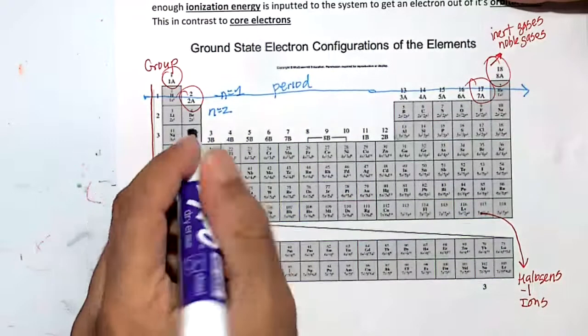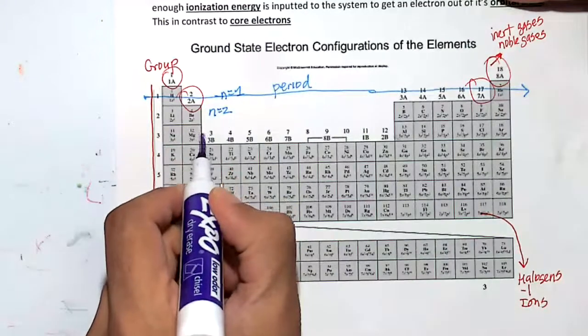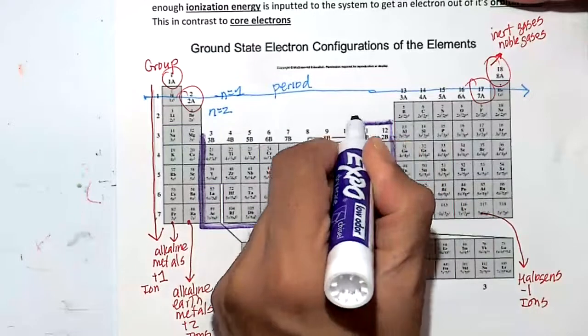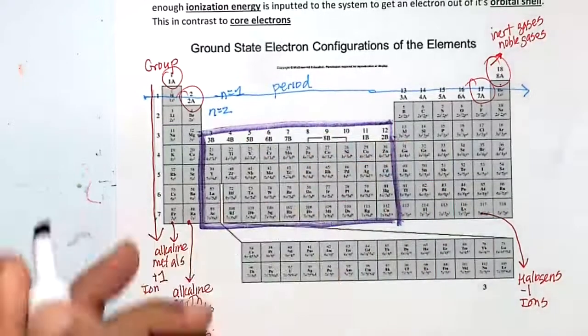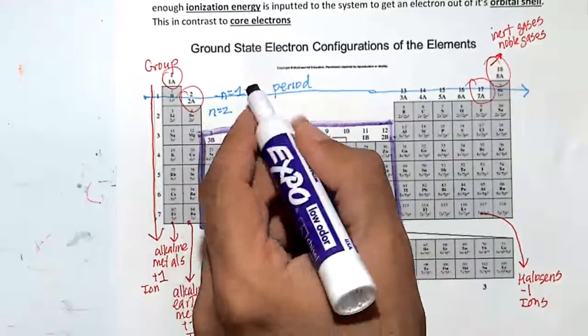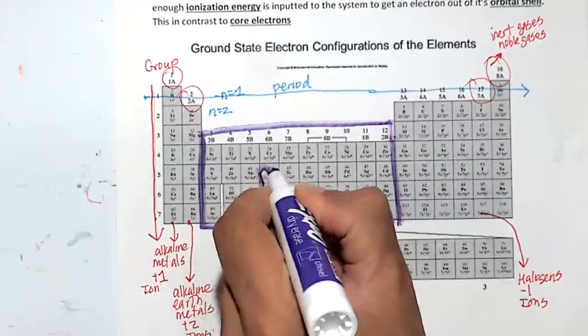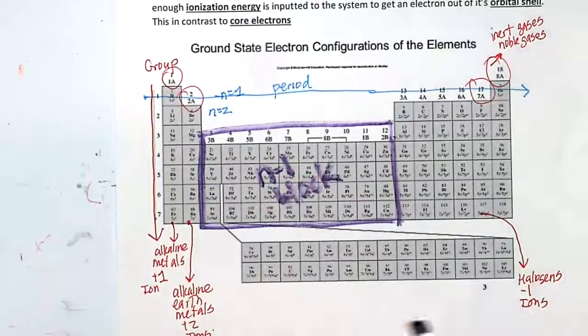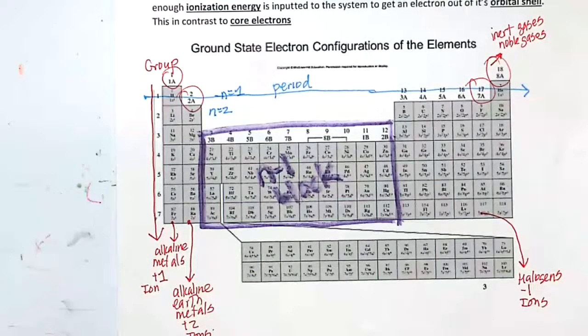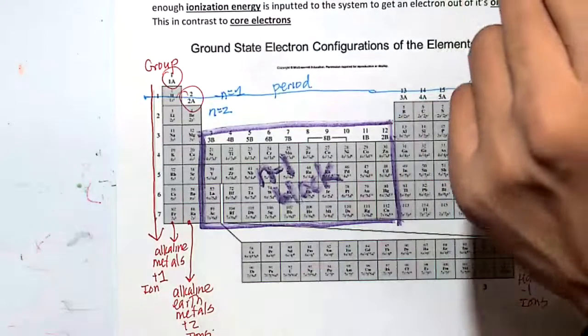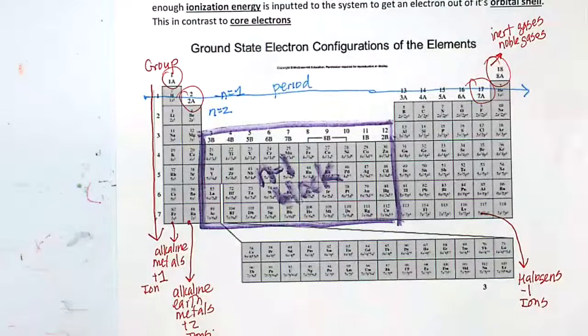Right here, this little rectangle here, this is called the n minus one block. The n minus one block, these are also called the transition metals.